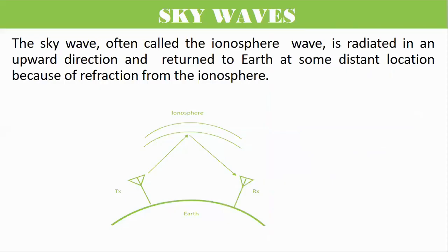Sky Wave Propagation. The sky wave, often called the ionosphere wave, when the signal is transmitted by the transmitting antenna in an upward direction, is reflected by the ionosphere layer and received by the receiving antenna, is known as sky wave propagation.